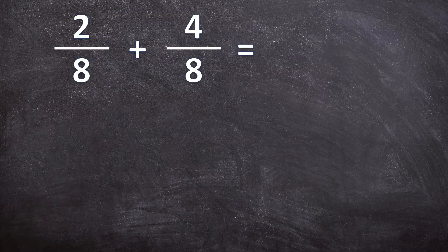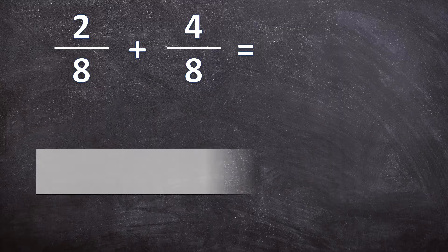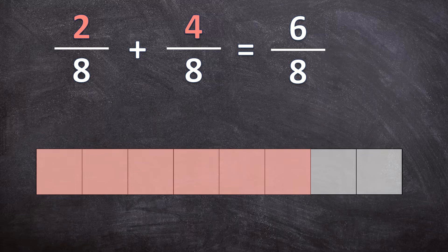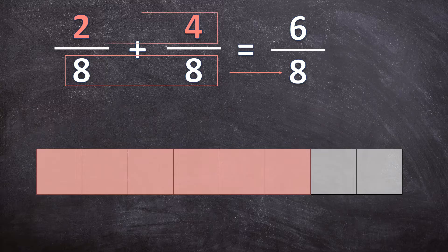Let's look at another example. Here we have 2 over 8 plus 4 over 8. For the last time we're going to use a picture and visualize this. We take a rectangle and divide it into 8 equal pieces. First I color in 2 pieces, and then I color in 4 more pieces. So in total I colored in 6 out of the 8 pieces. Our denominator stays the same, but we add the values in the numerator positions to get the numerator in our answer.